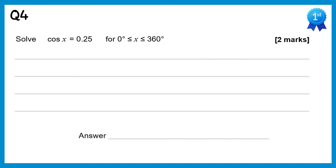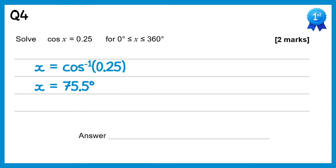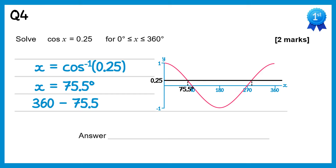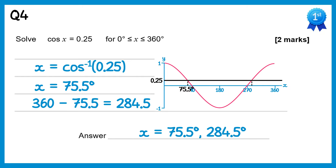For this question we do inverse cos of 0.25 and using your calculator you get 75.5 degrees to one decimal place. We draw the graph of y equals cos x and a horizontal line at 0.25, giving two solutions. We already have the left one at 75.5, and for the right one we do 360 take away 75.5, which is 284.5. So there are two solutions: 75.5 and 284.5.